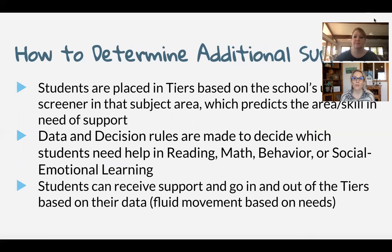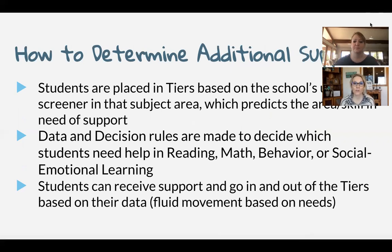So how do we determine additional support? Students are placed in your tiers based on the universal screener results. When you give that universal screener, you'll see where they place — whether they're below benchmark, well below, met benchmark, or above benchmark. Your data and decision rules are then used to decide what they need help in: what subject areas such as reading, math, behavior, or social-emotional learning, and even what specific skill they're low in — fluency, decoding, etc. Decision rules can be a little complex, and different districts have different needs, so if you need any help with decision rules, we have samples and we're here to support you.